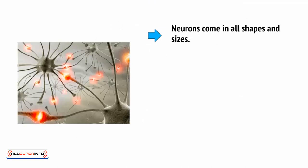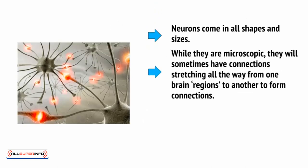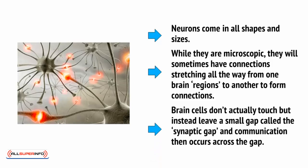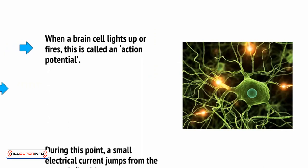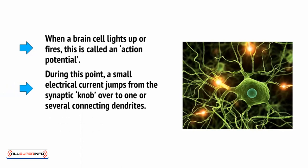Neurons come in all shapes and sizes. While they are microscopic, they will sometimes have connections stretching all the way from one of the brain's regions to another to form connections. Brain cells don't actually touch, but instead leave a small gap called the synaptic gap, and communication then occurs across the gap. When a brain cell lights up or fires, this is called an action potential. During this point, a small electrical current jumps from the synaptic knob over to one or several connecting dendrites. This is how signals find their way around the brain.